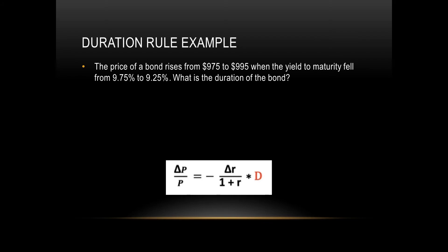Let's go over this example. The price of a bond rises from $975 to $995 when the yield to maturity fell from 9.75% to 9.25%. What is the duration of the bond? The original bond price P is $975, and the bond's risen by $20, so delta P equals $20. The original yield R is 9.75%, and delta R would be negative 0.5% because the yield has decreased.